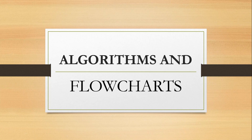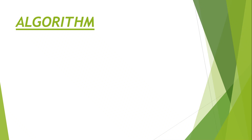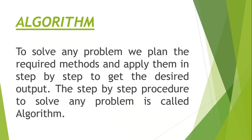It doesn't mean that we just had an idea of a software and we started making it. No — before making a software, we have various types of steps. The procedures, algorithm, and making a flowchart of the software is one of them. To solve any problem, we plan the required methods and apply them step by step to get the desired output. The step-by-step procedure to solve any problem is called an algorithm.